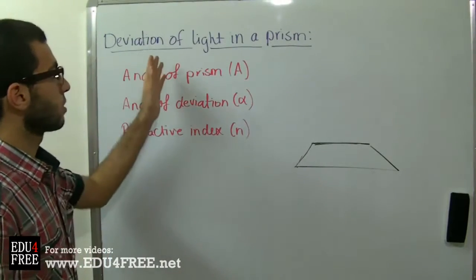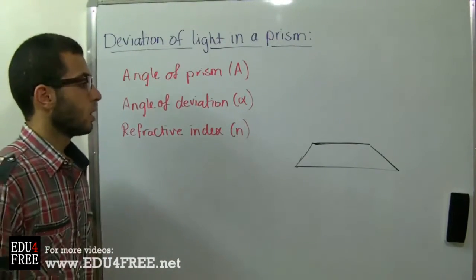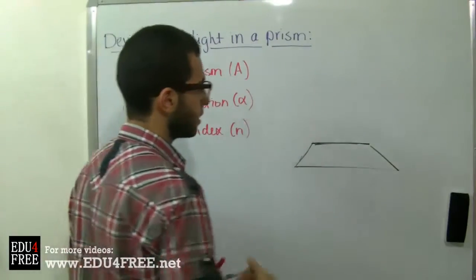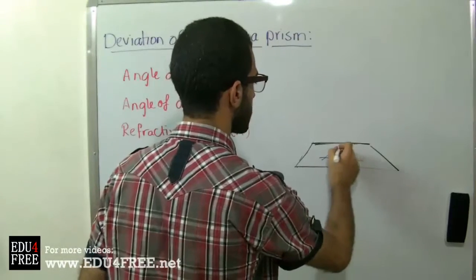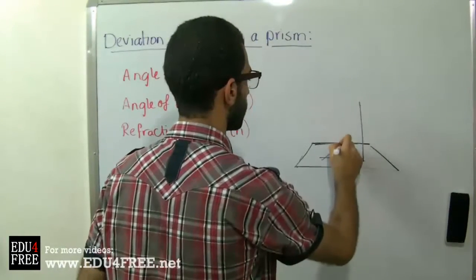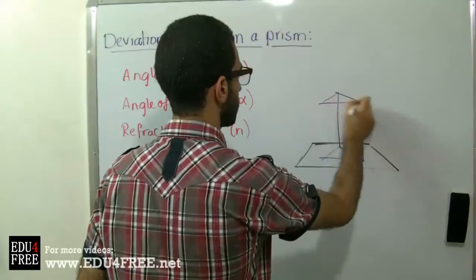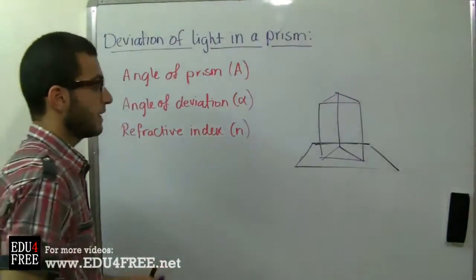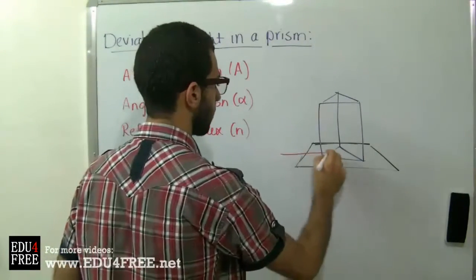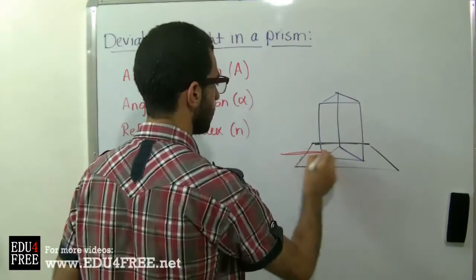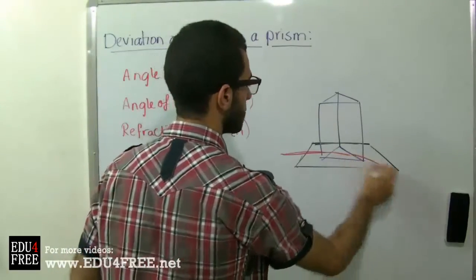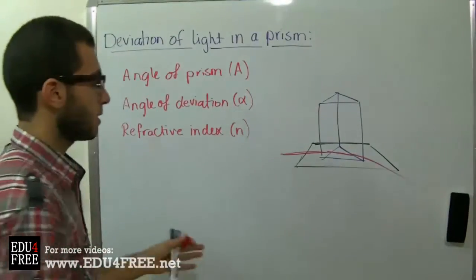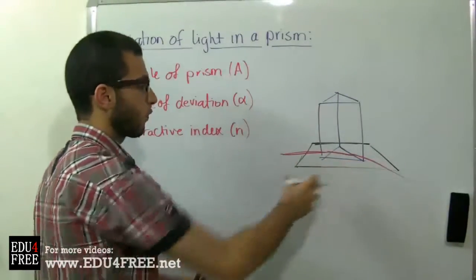Today we will talk about the deviation of light in a prism. We have a glass prism on a piece of paper. Light passes from one end, falls on the prism, and then deviates out the other end. We are going to trace the path of light.